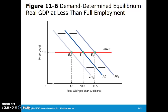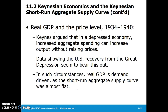If aggregate demand shifts outward, then quantity demanded in real GDP increases, but because there's no change in price level given the short-run aggregate supply curve, there is no change in output. The opposite is true of a decreased aggregate demand. Keynes argued that in a depressed economy, increased aggregate spending can increase output without raising prices. Data showing the U.S. recovery from the Great Depression seem to bear this out, as real GDP is demand-driven when the short-run aggregate supply curve is almost flat.